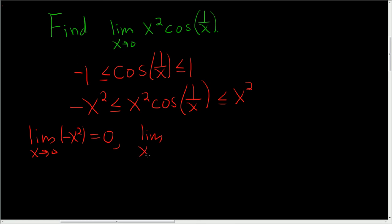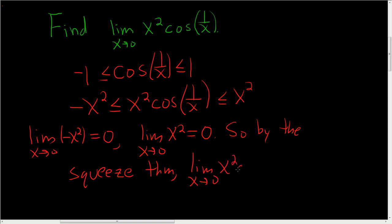Likewise, taking the limit of the right hand side of the inequality, we get 0. So by the squeeze theorem, our limit, which is the limit as x approaches 0 of x squared cosine 1 over x, is also 0.